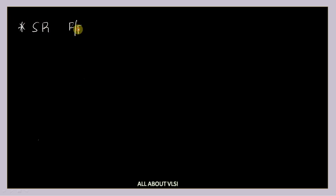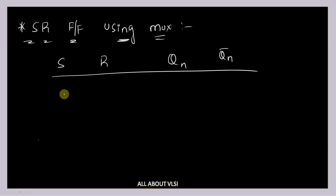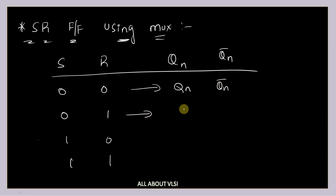Let us try to implement the first type of flip-flop, which is the SR flip-flop using MUX. For implementing this flip-flop using a multiplexer, I am going to draw the truth table of my SR flip-flop: SR inputs and output QN and QN bar. So if it is 00, 01, 10, and 11 — this is the hold condition, reset condition, set condition, and don't care condition.